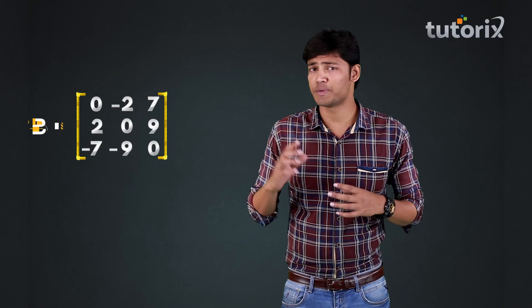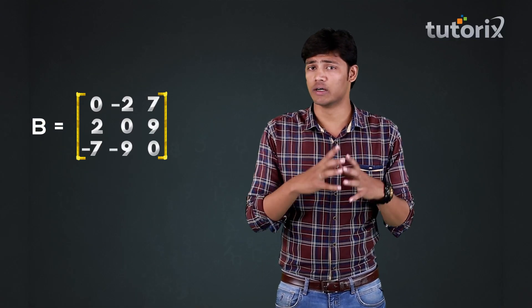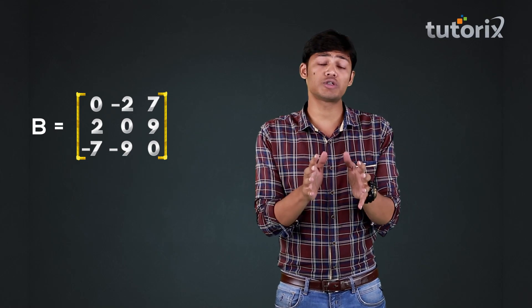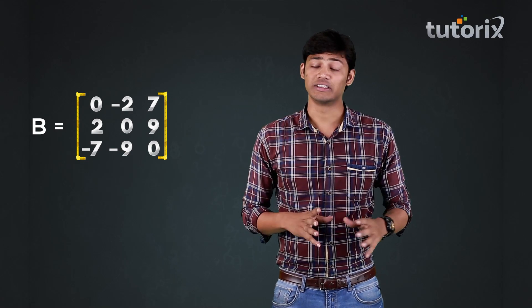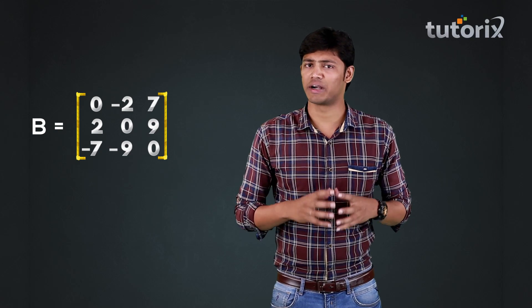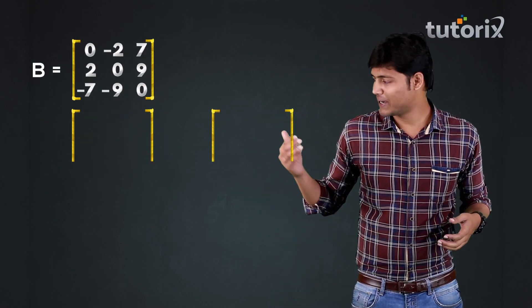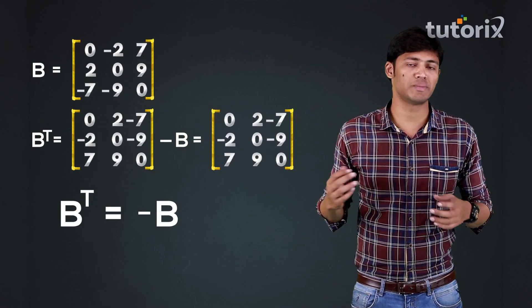Here is a matrix B. You find out whether this matrix is a skew-symmetric matrix or not. The matrix B is a skew-symmetric matrix since B transpose is equal to minus B.